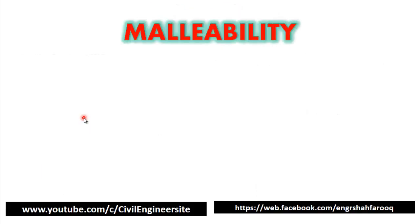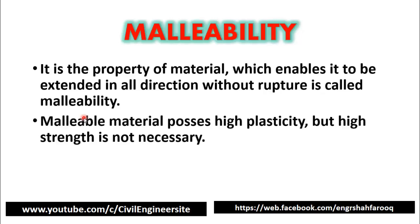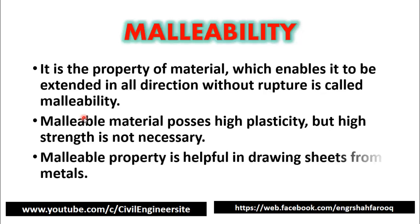Now we will discuss another property of material: malleability. Malleability is the property of material which enables it to be extended in all directions without rupture. The difference between malleability and ductility is that ductility is the ability of a material to be elongated in the longitudinal direction, while malleability enables extension in all directions. Malleable material possesses high plasticity but high strength is not necessary. This property is helpful in drawing sheets from metal.